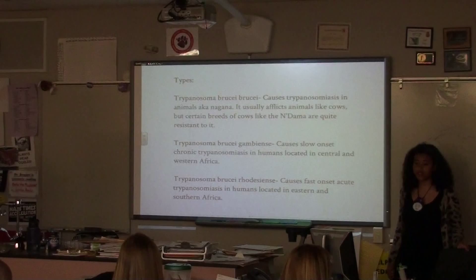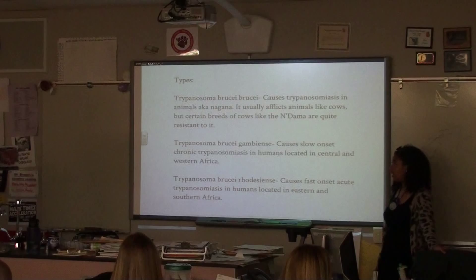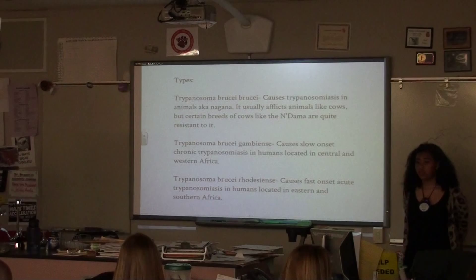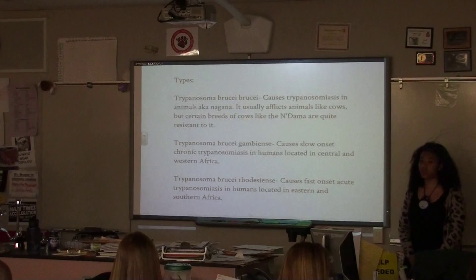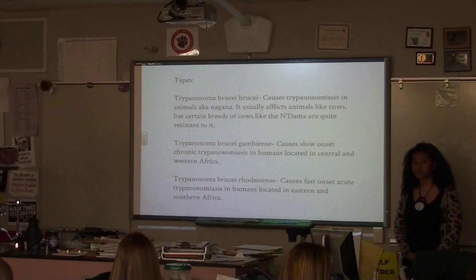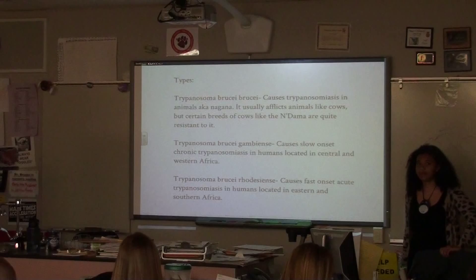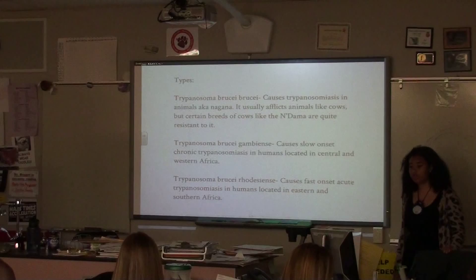There are three different subspecies in Trypanosoma brucei. Trypanosoma brucei brucei causes trypanosomiasis in animals, like cattle — it's called Nagana and it affects cows in Africa. Certain species, like the Ndama cows, are pretty resistant to it. But it doesn't harm humans, because some aspects of our immune system are able to kill it effectively.